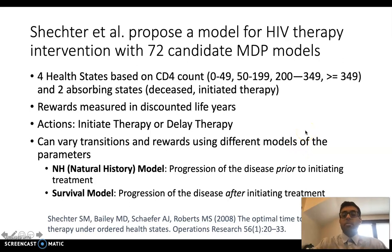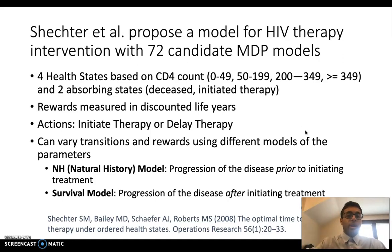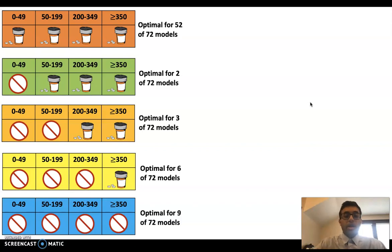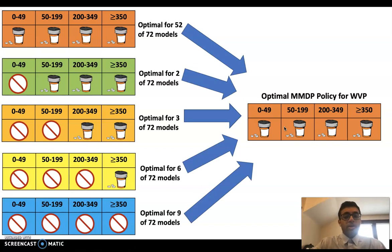We also wanted to apply this algorithm to a case with a very big discrepancy in model data. Schechter and others proposed a model for HIV therapy intervention that had 72 different candidate MDP models, four health states based on different CD4 counts, rewards measured in discounted life years, and two physician actions — initiate HIV therapy or delay. Models were constructed using different natural history models and survival models. We found five different policies that could be taken depending on which model you were looking at, with the top policy being optimal for 52 of the 72 models. When using the MMDP, the best policy for all models was to initiate HIV therapy in all states.